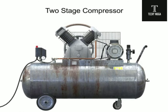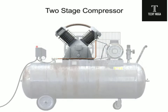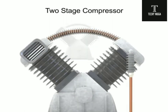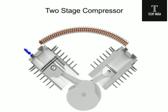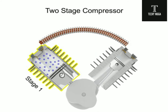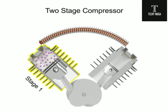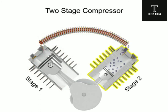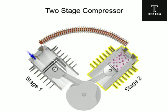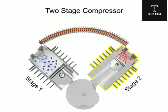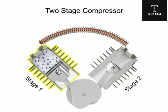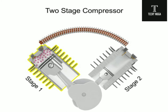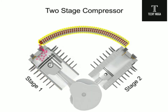To avoid the hazards of overheating and still generate higher pressures, manufacturers make compressors with multiple stages. The air is compressed in the first stage, which is typically the largest stage, then cooled, then compressed in a second stage. The hot compressed air from the first stage is conducted to the second stage through finned tubing, which is exposed to the air from a flywheel fan.